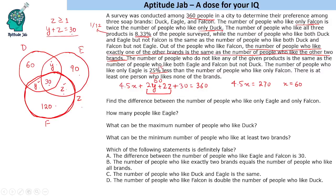Now let us look at the questions. Find the difference between the number of people who like only Eagle and only Falcon. Only Eagle is 90 and only Falcon is 120, so the difference is 30.